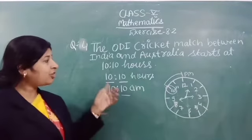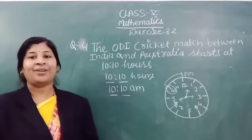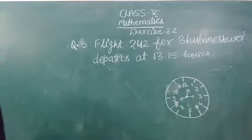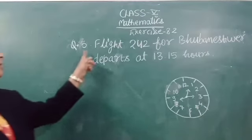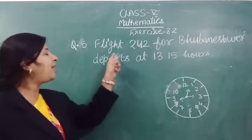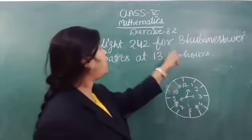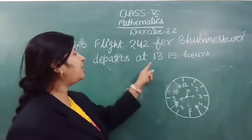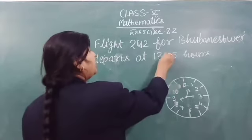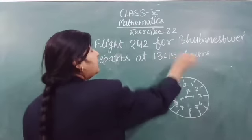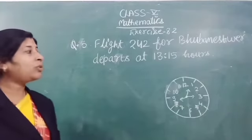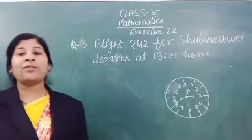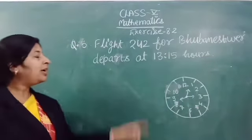Clear? You solved this question? Very nice. Now, student, question number 5: Flight 242 for Hoonishwa departs at 13:15 hours. So, we calculate this time in 12-hour clock.